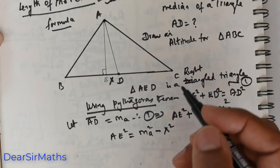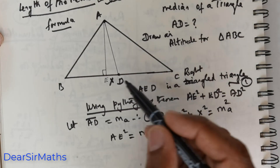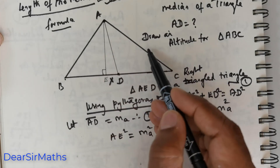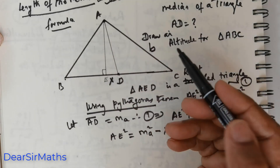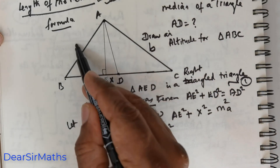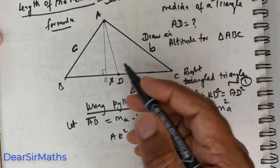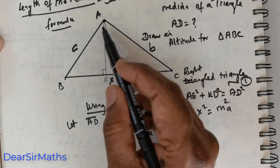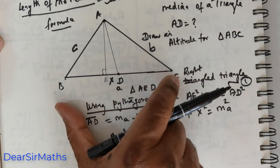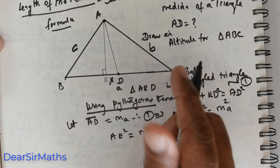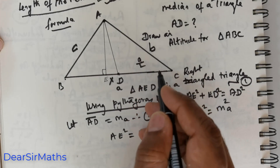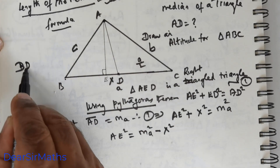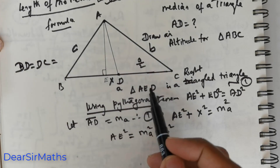Now let me draw your attention to one important aspect of the triangle. The side opposite to vertex B is called side B, and the side opposite to vertex C is called side C. The side opposite to vertex A is called A units. This entire side BC is A units. Since D is the midpoint of BC, BD equals DC equals A over 2.